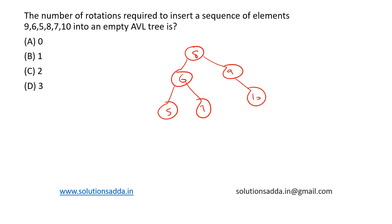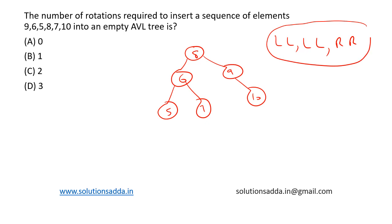In total, we have made 3 rotations: LL, LL, followed by RR. So the number of rotations required to insert this sequence is 3, which is option D.